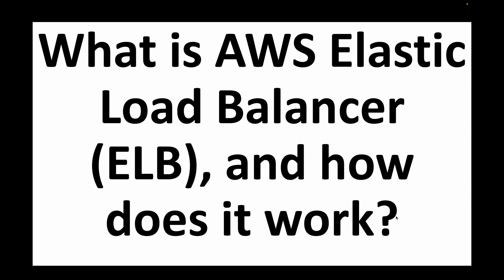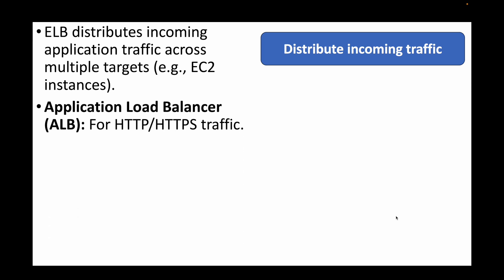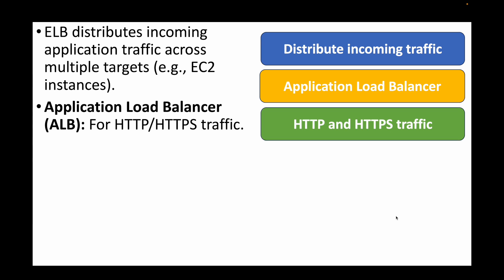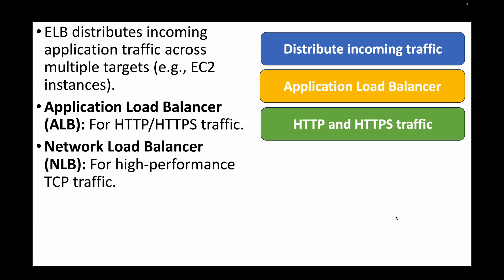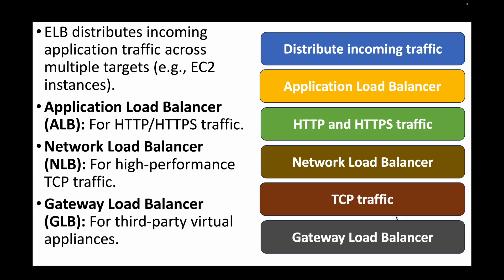The next question is: what is AWS Elastic Load Balancer and how does it work? Elastic Load Balancer is used to distribute incoming traffic across multiple targets such as EC2 instances. We have the Application Load Balancer, which supports HTTP and HTTPS traffic. Then the Network Load Balancer, which supports TCP traffic and is used for high performance at the network layer. And finally the Gateway Load Balancer, which is used with third-party virtual appliances like firewall appliances when you want all traffic to flow through it.